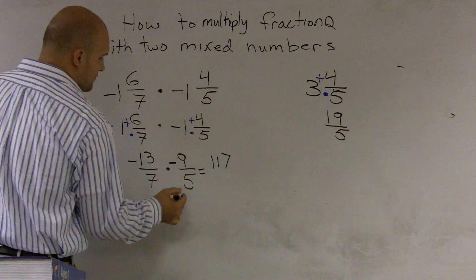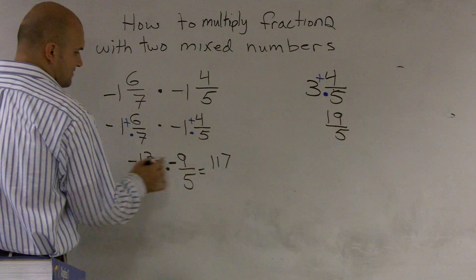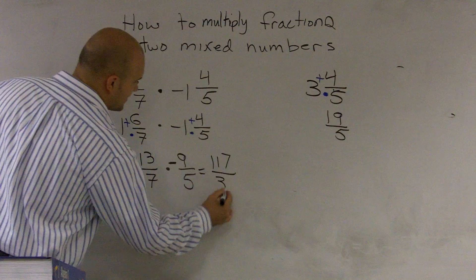And seven times five would be... I'm sorry, negative times negative would become positive. And nine times seven would become 35.